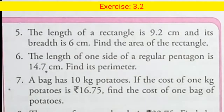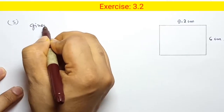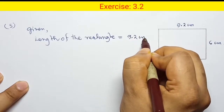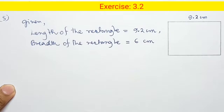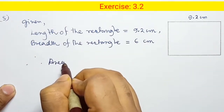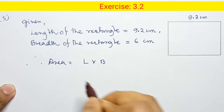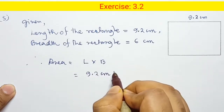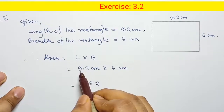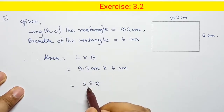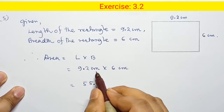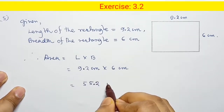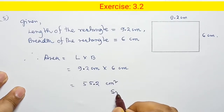The length of a rectangle is 9.2 centimeters and its breadth is 6 centimeters. Find the area of the rectangle. Given: length equals 9.2 cm, breadth equals 6 cm. Therefore, area equals length into breadth, so area equals 9.2 into 6. After multiplication, place the decimal point. The unit is centimeter times centimeter, which equals centimeter squared.